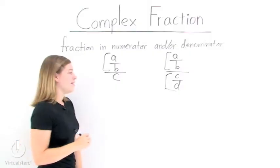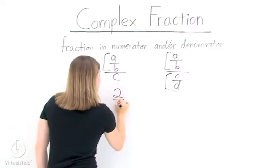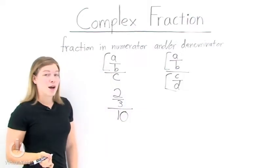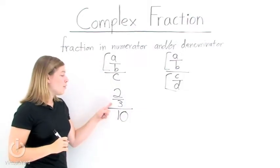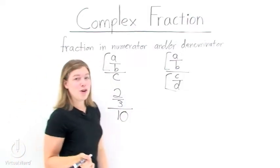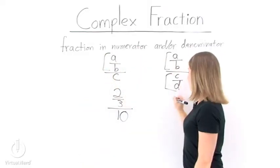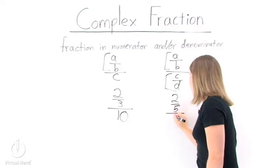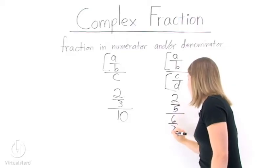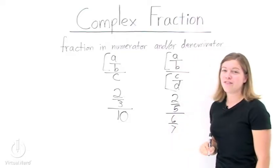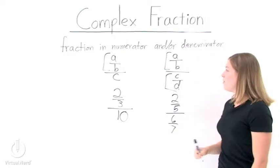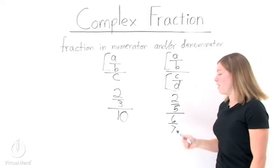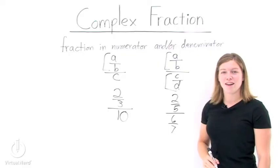Let's look at some examples. 2 over 3 divided by 10 — that's a complex fraction. 2 over 3 is in the numerator of the complex fraction. One more: 2 over 5 divided by 6 over 7. That's a complex fraction too. It's one that looks like this — we have 2 fifths in the numerator and 6 sevenths in the denominator.